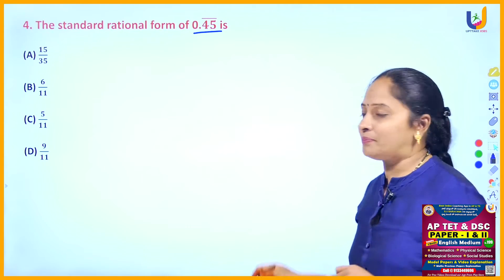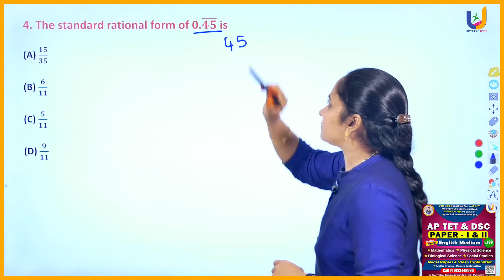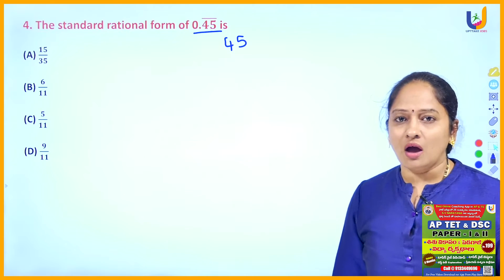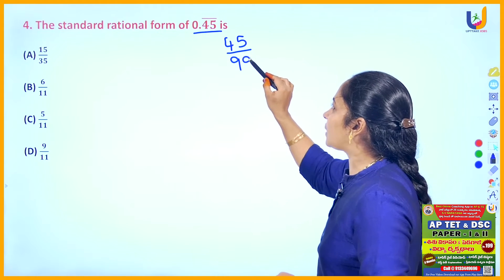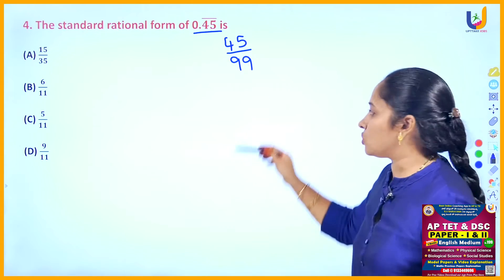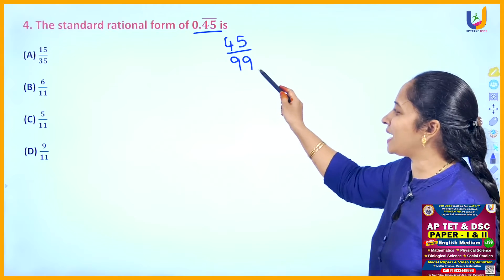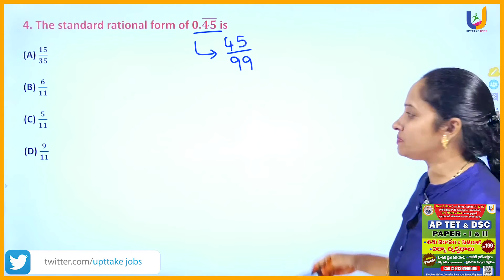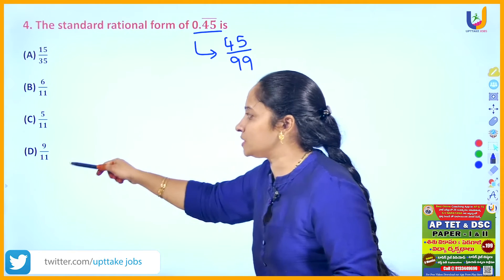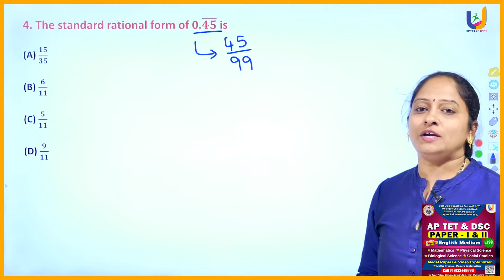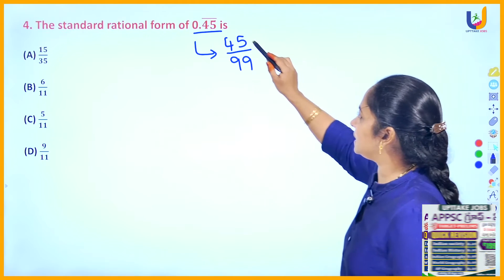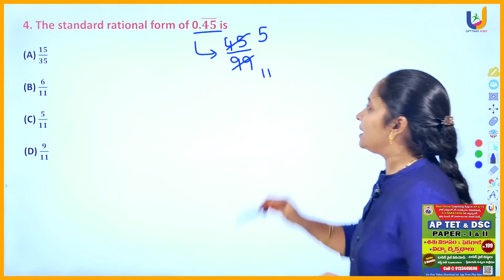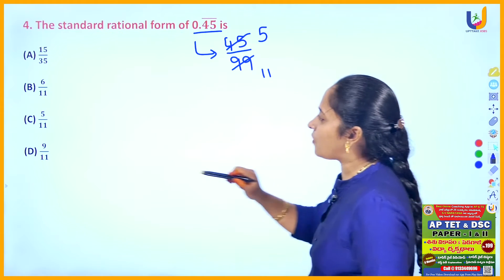There is a shortcut method to convert non-terminating repeating decimals into rational form. Whatever digits are under the bar, write them as the numerator — here 4 and 5 are under the bar, so write 45 as the numerator. However many digits are repeating, write that many nines in the denominator — two digits, so two nines: 45 by 99. The HCF of 45 and 99 is 9. Cancelling: 9 fives are 45, 9 elevens are 99 — so the simplest form is 5 by 11.